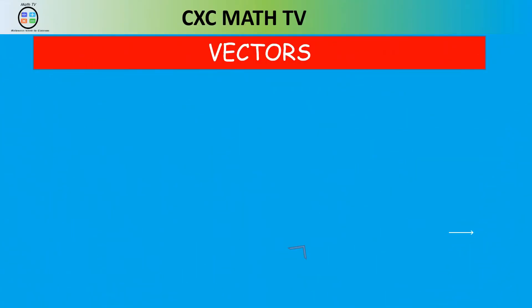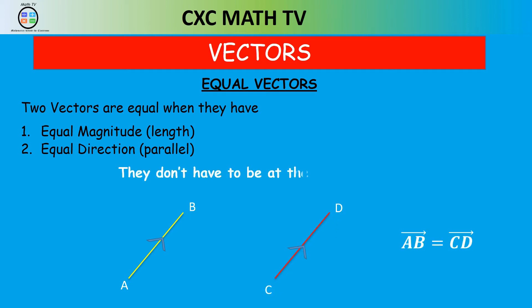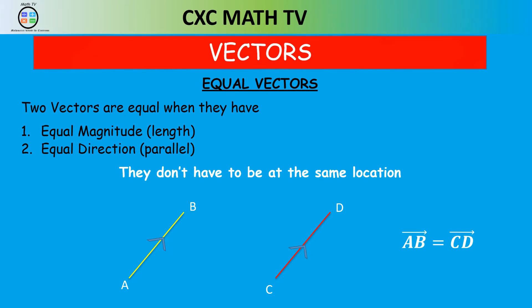The next thing to talk about is what is known as equal vectors. Two vectors are equal when they have equal magnitude and equal direction — they don't have to be in the same location. For example, we have a line going from point A to point B, and another from C to D. Both are slanted the same way with arrows going in the same direction and having equal length. In this case we say that vector AB is equal to vector CD — those are equal vectors.